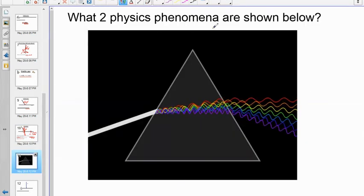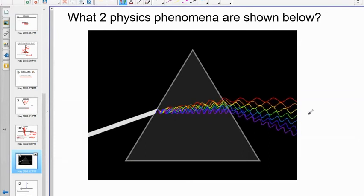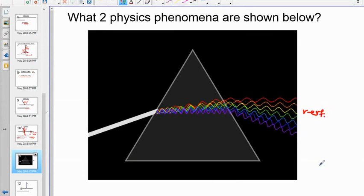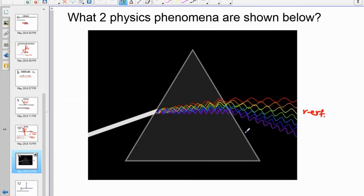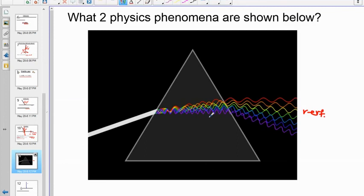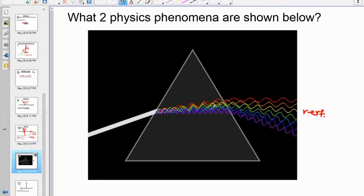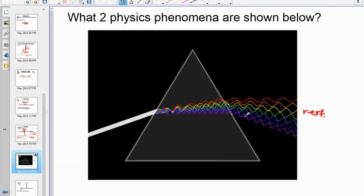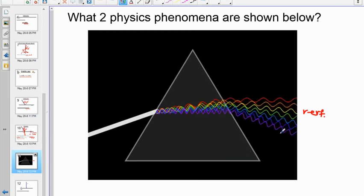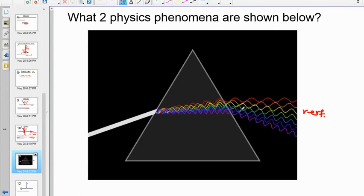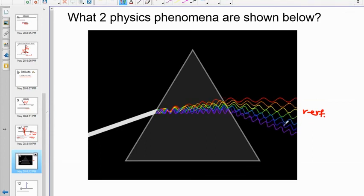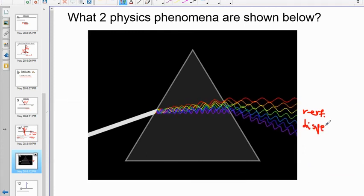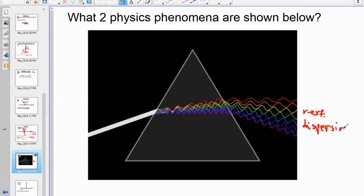What two physics phenomenon are shown below? First off, you may notice that the light is bending, so that would be refraction. But the more important one here, the very colorful phenomenon, shows that the light colors are separating, meaning the different wavelengths and frequencies are separating. So, it's important to remember that violet bends violently. Violet's always going to bend the most and red the least. And the root word, to disperse, comes into play here. This is dispersion that we're talking about.